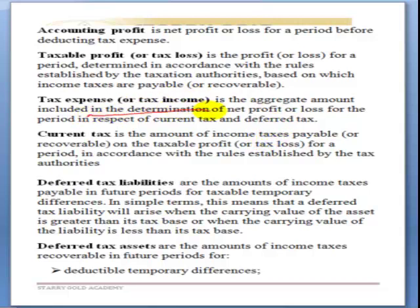Tax expense is the aggregate amount included in the determination of net profit or loss for the period in respect of current and deferred tax. Any increase or decrease in deferred tax will affect the tax expense. Current tax is the amount you are paying within the current reporting period, while deferred tax liabilities are the amounts of income taxes payable in future for taxable temporary differences.